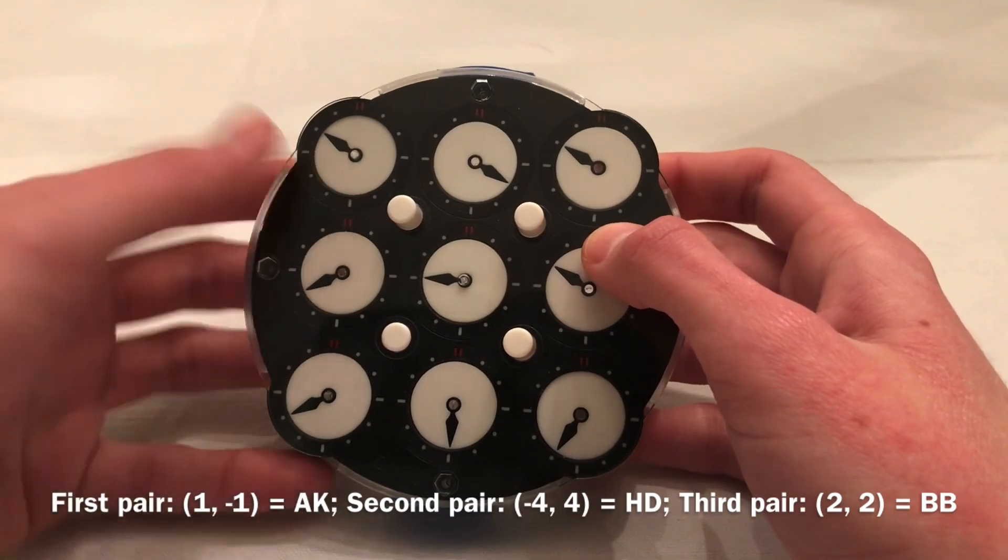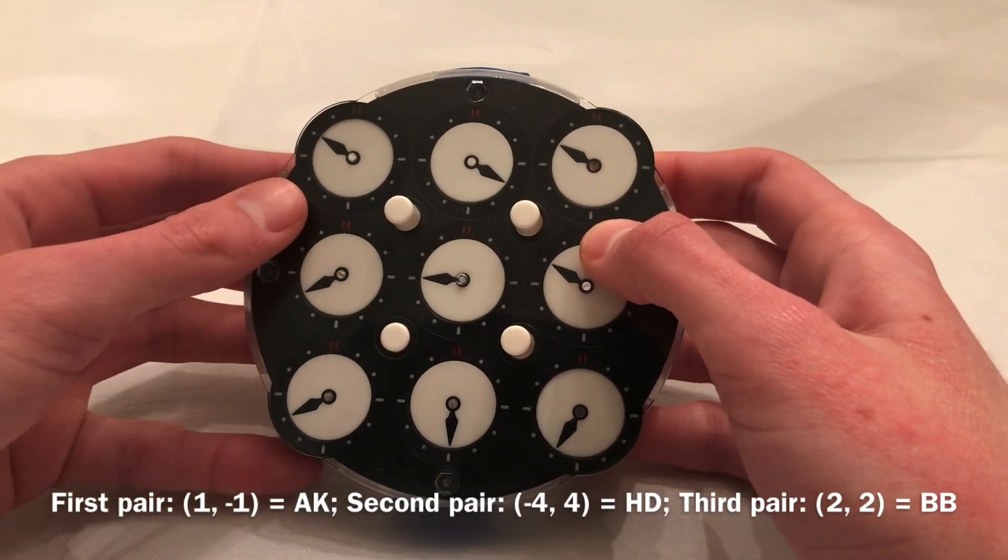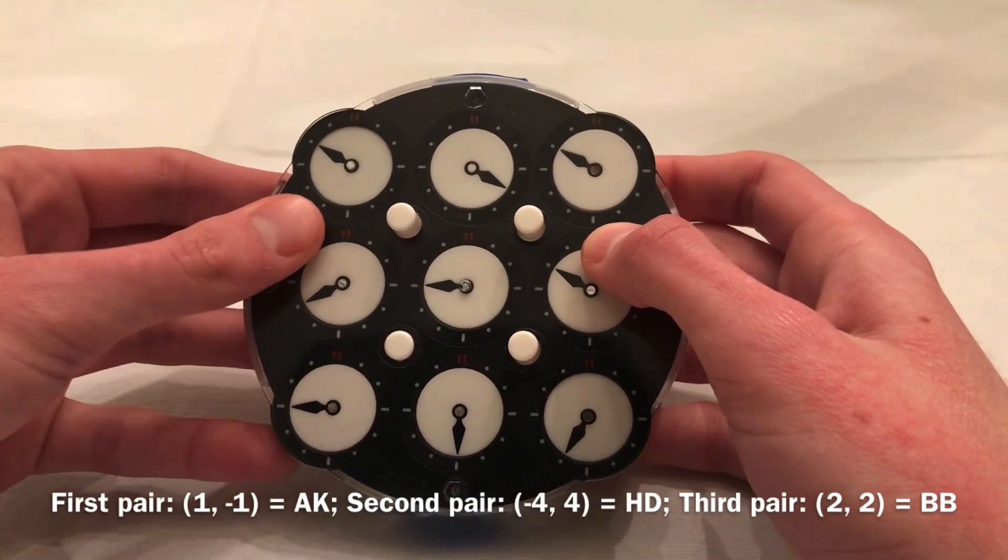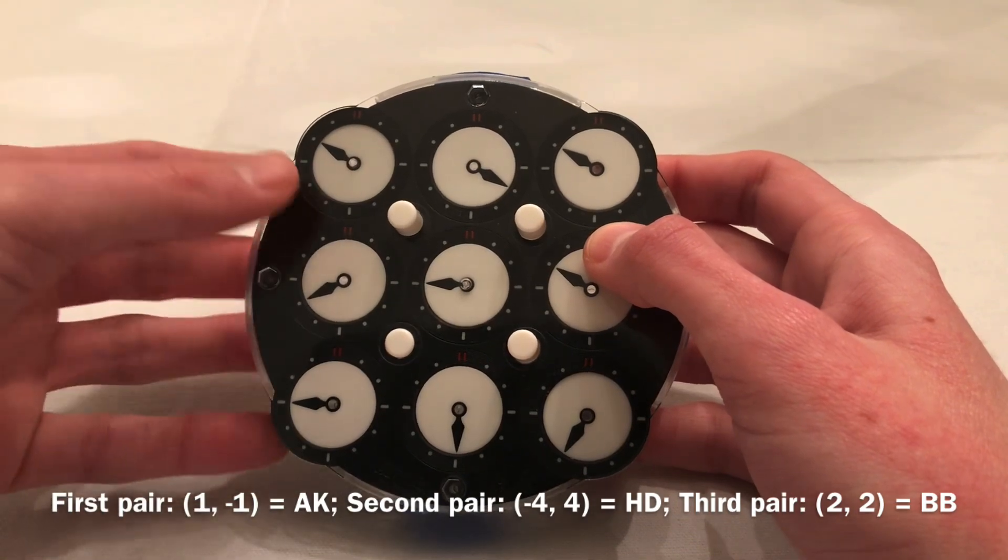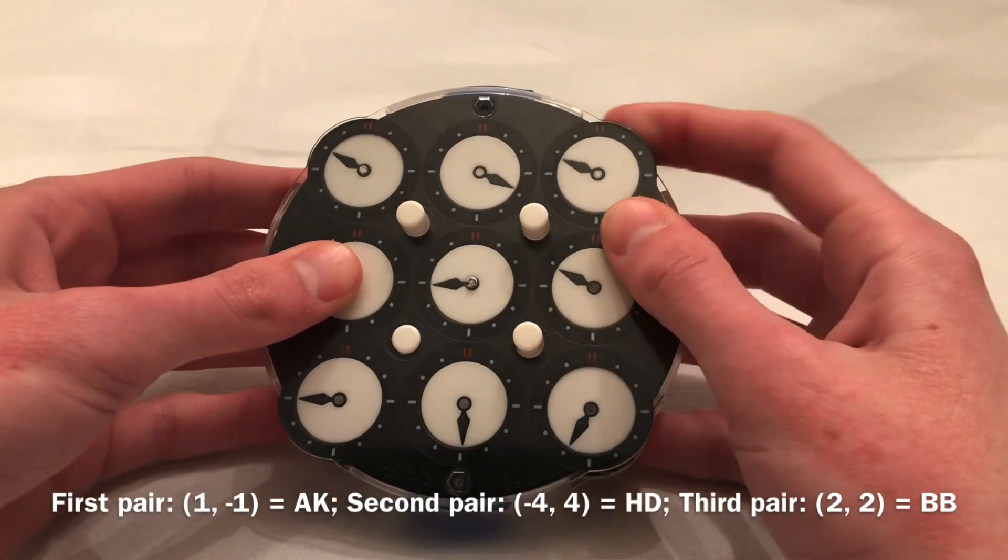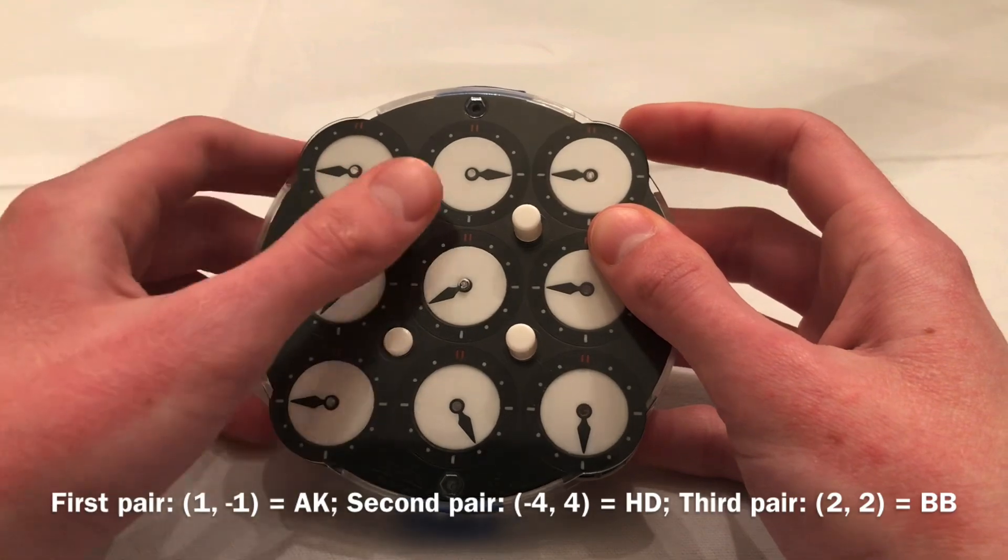It'll make sense once we start getting into it. So, the first pair was ak, so I'd execute plus 1 here on the left side, and minus 1 on the right side.